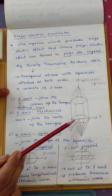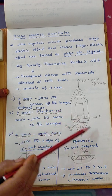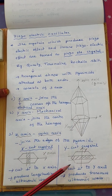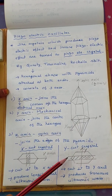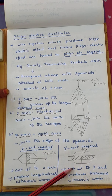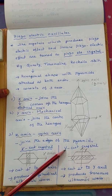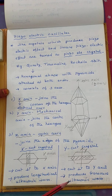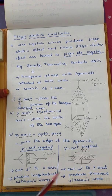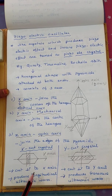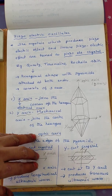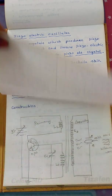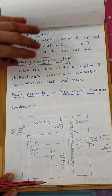For the Y-cut crystal, the slice is cut perpendicular to the Y axis. This Y-cut crystal produces transverse ultrasonic waves. So the X-cut crystal produces longitudinal ultrasonic waves, while the Y-cut crystal produces transverse ultrasonic waves.